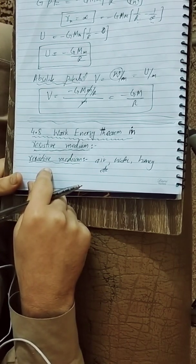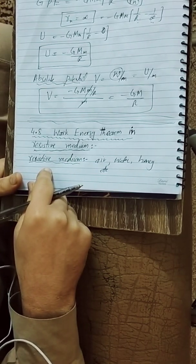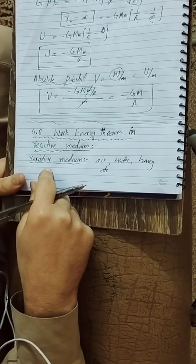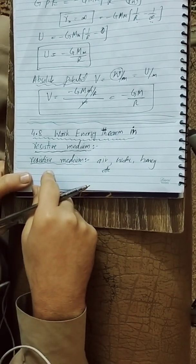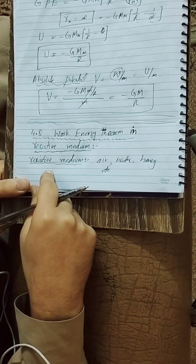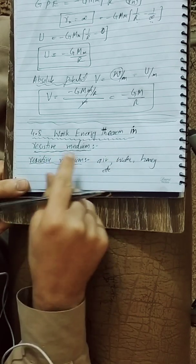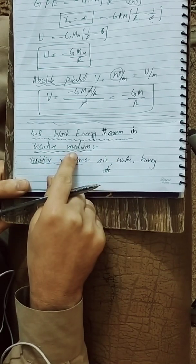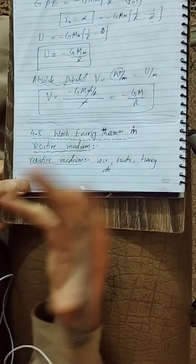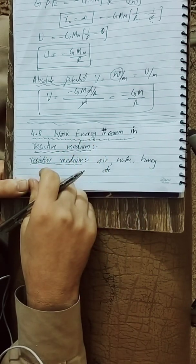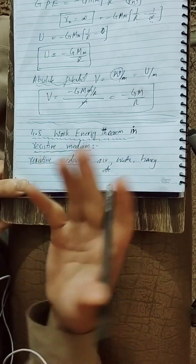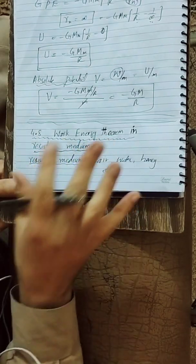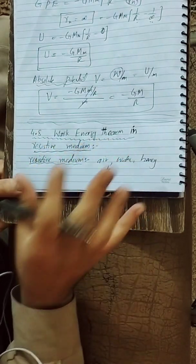A resistive medium is one that offers resistance for the motion, resists and opposes the motion. We have to study the Work Energy Theorem in the Resistive Medium, where we perform work and the energy changes from one form to another form, but the total amount of energy will always remain conserved.